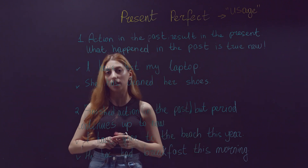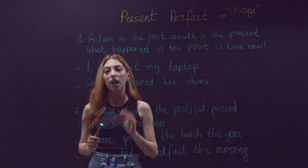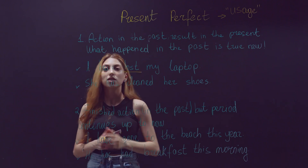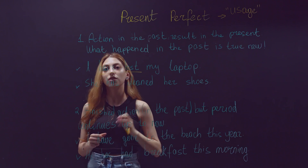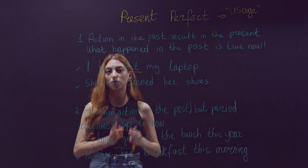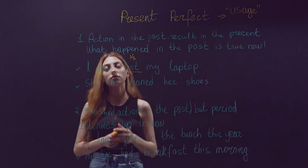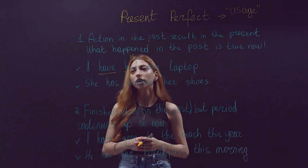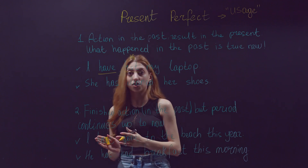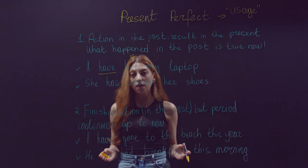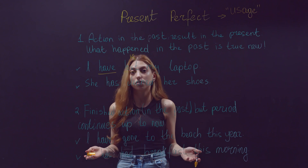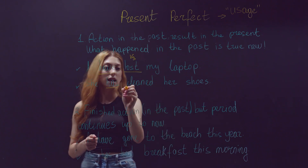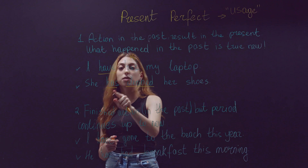The first example: 'I have lost my laptop.' The present perfect structure is 'have + lost' — lost is the third form of 'lose': lose, lost, lost. Analyzing this sentence: I had a laptop, I have lost it, and the result is that right now I don't have a laptop. The second example: 'She has cleaned her shoes.' The structure is 'has + cleaned.'